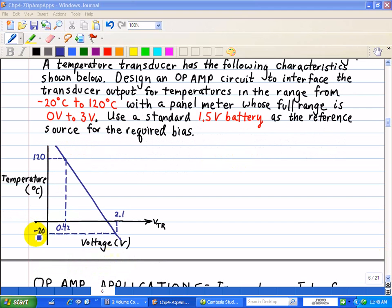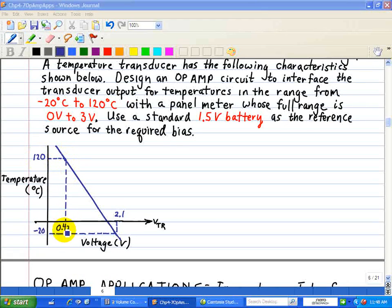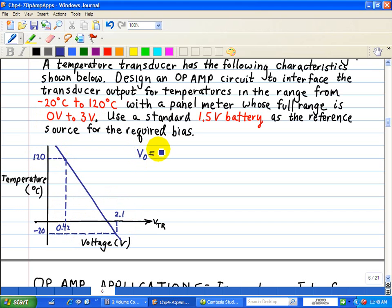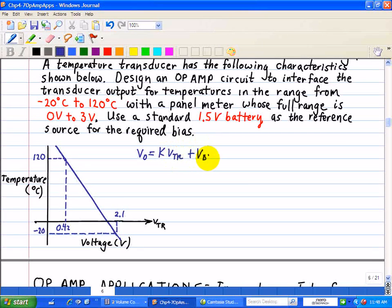So once again, corresponding to negative 20 degrees is 2.1 volts, corresponding to 120 degrees is 0.42 volts. And we want to feed this voltage range and convert it to a range of 0 to 3 volts. So using our relationship again of VO equal to K times the transducer voltage plus V bias.